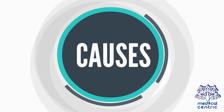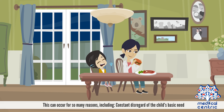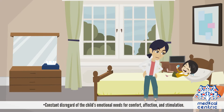Reactive Attachment Disorder is caused by a problematic history of care and social relationships, usually as a result of detachment between a young child and his or her primary caregiver. This can occur for many reasons, including constant disregard of the child's basic needs, and constant disregard of the child's emotional needs for comfort, affection, and stimulation.